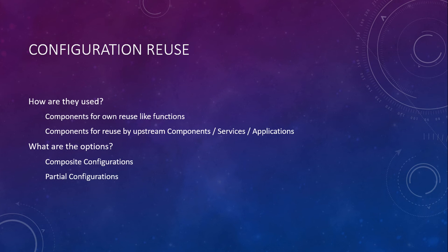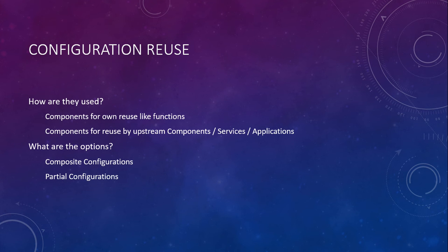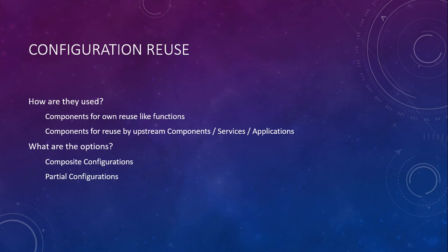Partial configurations are something people jump to in a distributed environment - this person configures the system this way, another person configures it that way, and you want to jam them together on the target node. There are positives, but there are downsides too. You need to set the meta configuration to define how the system will look with these chunks. There's no versioning for partial configurations - whatever the current configuration is gets applied.